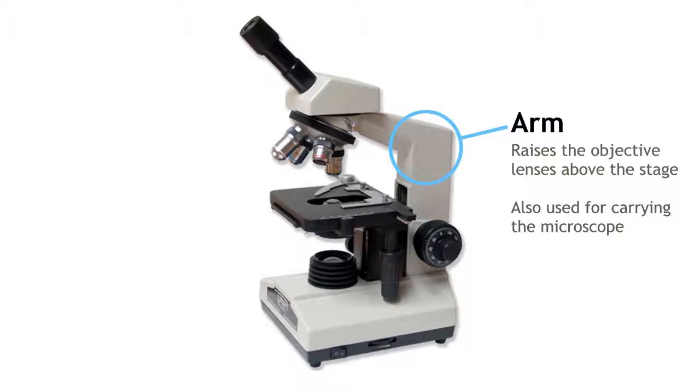The arm is like the backbone to the microscope. It raises the objective lenses above the stage and is also the place used to carry the microscope from one place to another.